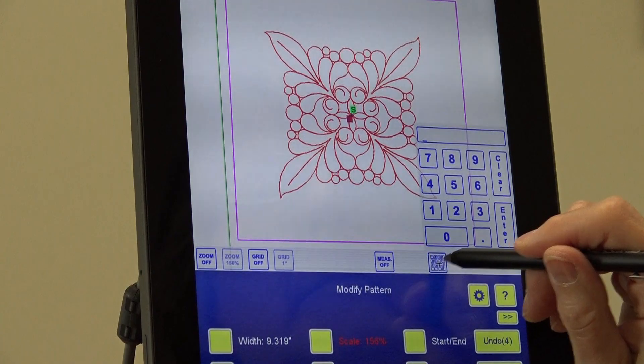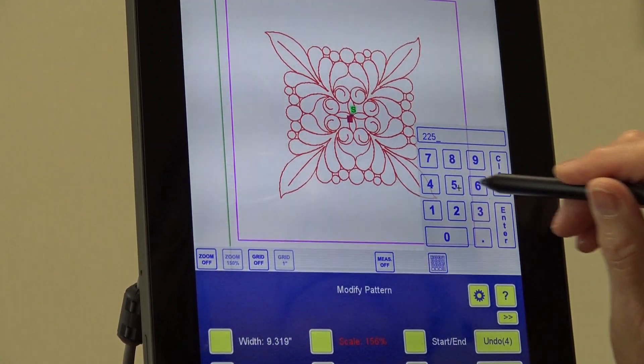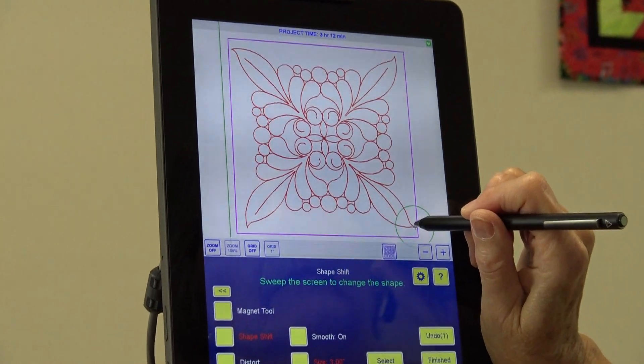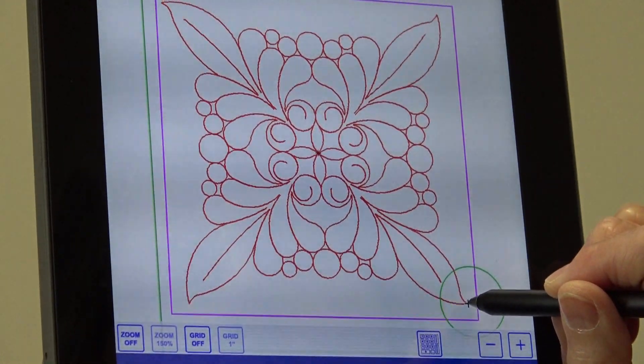In addition to altering the pattern's size, rotating, and flipping, patterns can be tweaked to perfectly fit the piecing of the quilt.